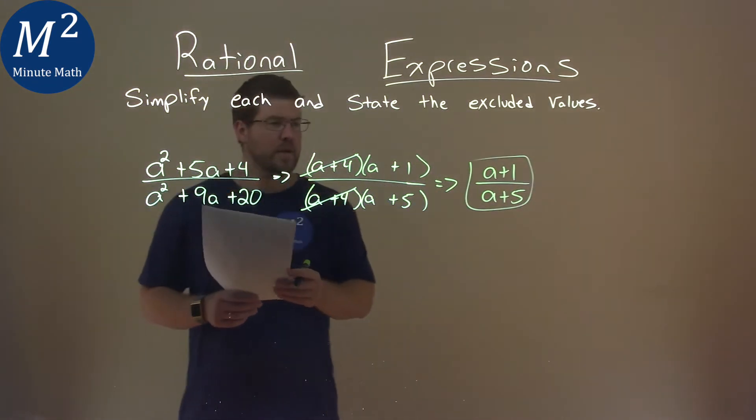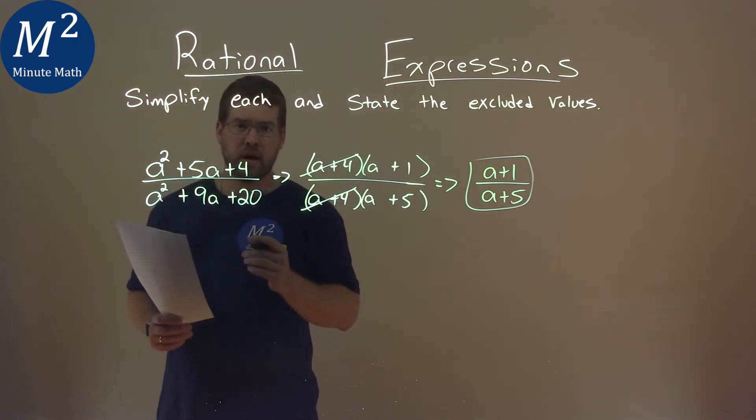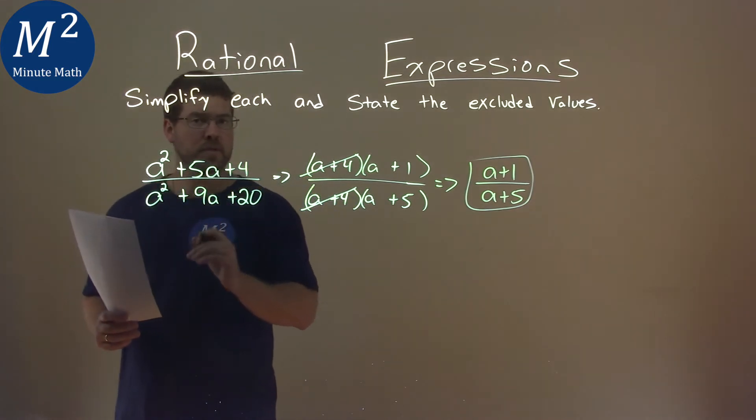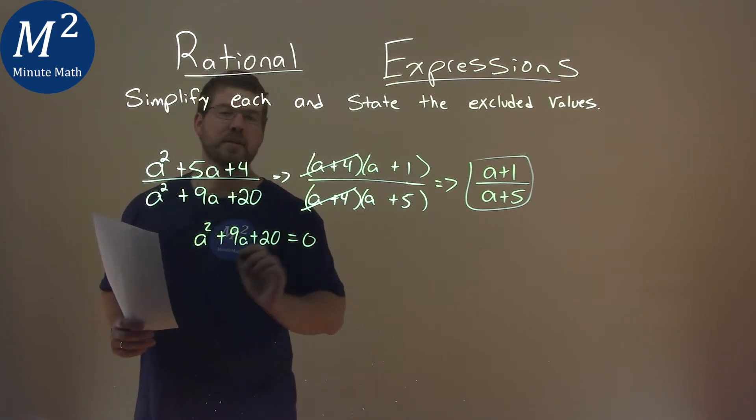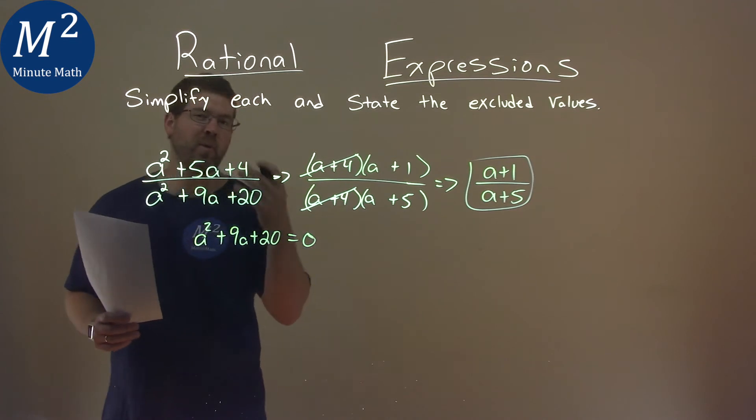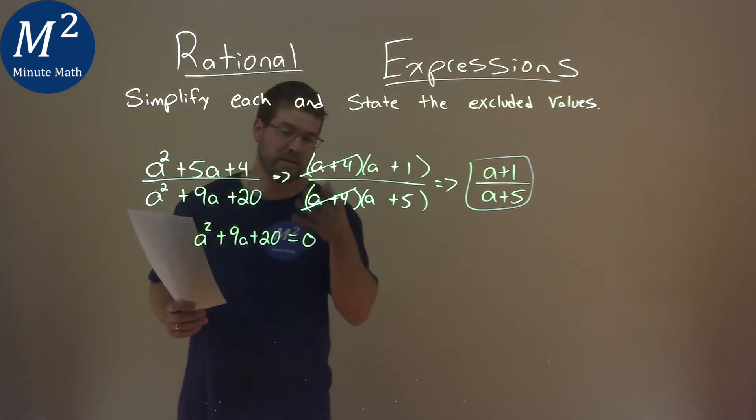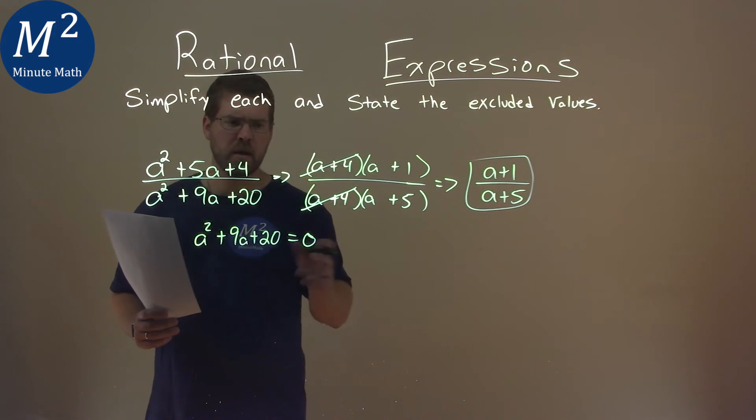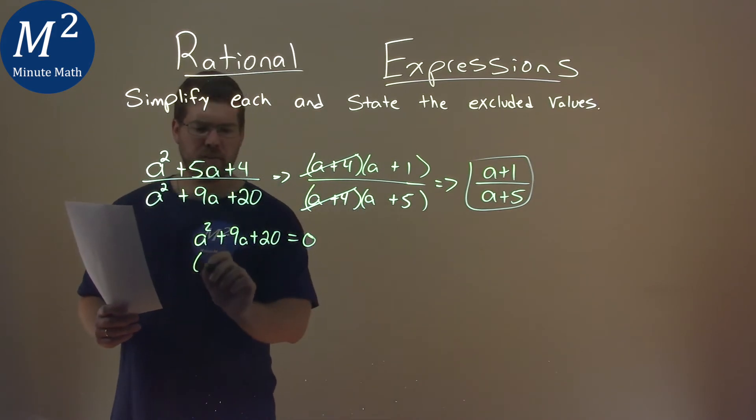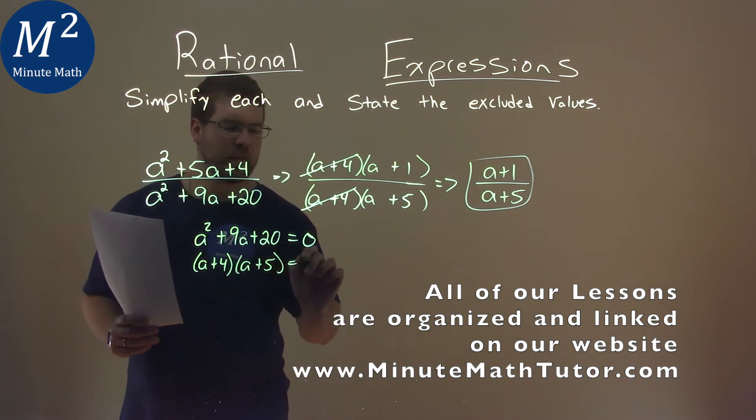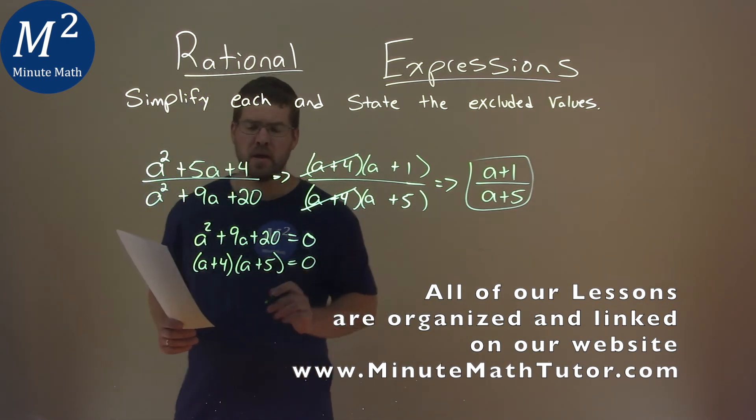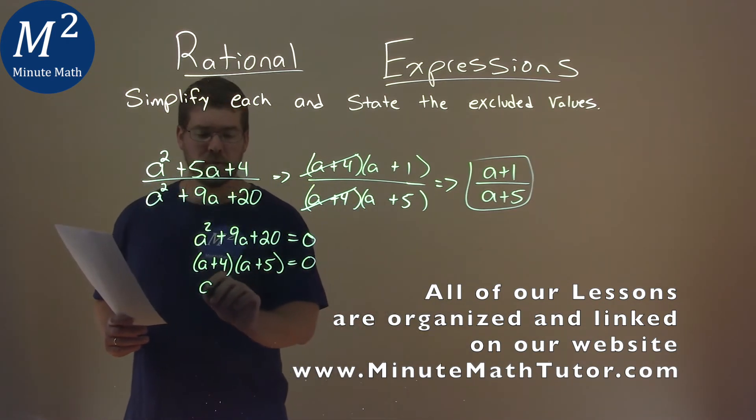From here, we want to find our excluded values. We start with our original expression and take that denominator, a squared plus 9a plus 20, and set it equal to 0. We want to find when the denominator equals 0 because we can't divide by 0. Luckily, we've already factored this: (a plus 4) times (a plus 5) equals 0.